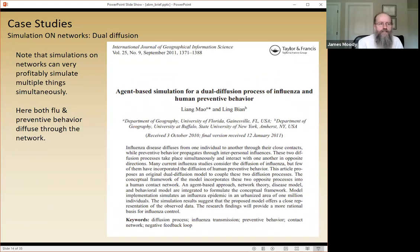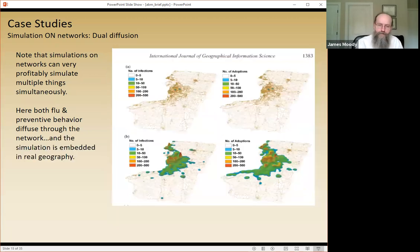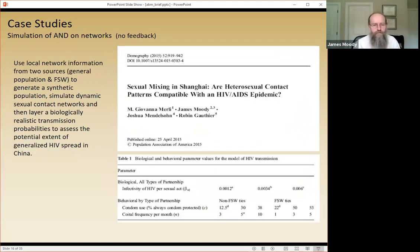Note that the beauty about simulation on networks is that you don't have to simulate a single thing on a network. You can simulate competing things. It might be that I'm simulating flu and I'm simulating protective behavior against getting the flu simultaneously. What you want to see is whether or not one beats the other out or under what conditions one beats the other out so that you could help generate better policies for promoting flu prevention. In this case, this is a really fun simulation because the contact network is actually spatially governed.